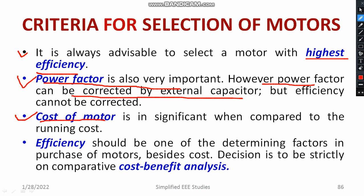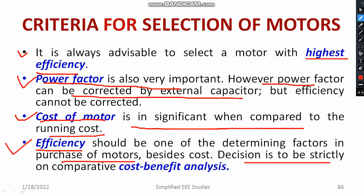Cost of the motor is another important matter. The cost should be moderate, and it has a significant role when compared to the funding cost. Efficiency should be one of the determining factors in the purchase of a motor. The decision needs to be strictly based on a comparative cost-benefit analysis conducted over certain years before purchasing a particular motor.